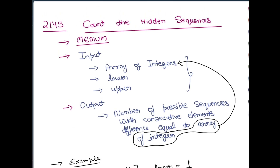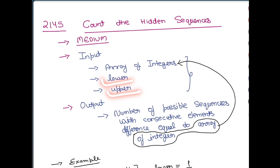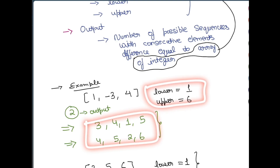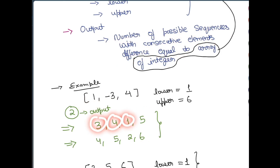The question specifies that elements of the hidden sequence cannot be less than the lower bound or more than the upper bound. Lower and upper are both inclusive. With lower=1 and upper=6, the output is 2 because there are exactly two valid sequences where all elements are within range.